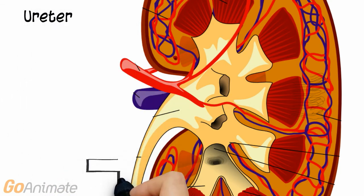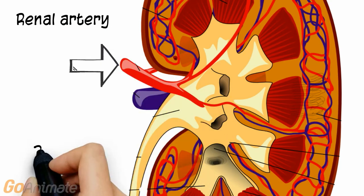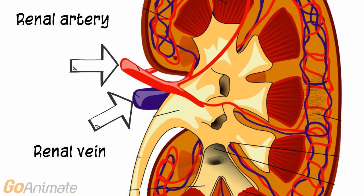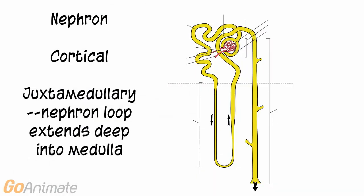Urine drains from the renal pelvis to the ureter. The area where the ureter exits the kidney and the renal artery and vein enter is called the hilum. The kidney is filled with microscopic structures called nephrons. There are cortical nephrons and juxtamedullary nephrons, which extend deep into the medulla.